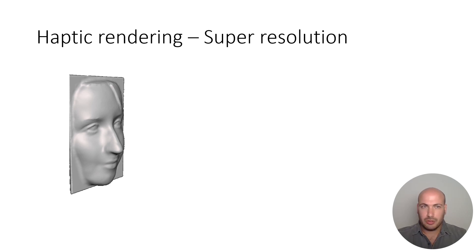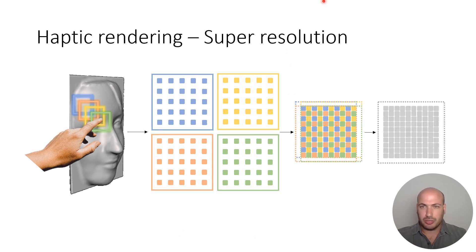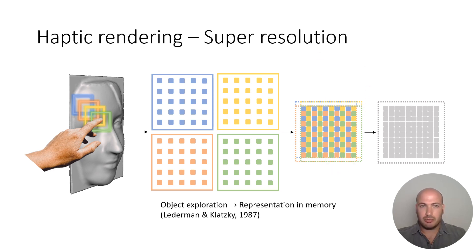The users move their finger along the surface. At every point, the feedback is given in low resolution. Between the high operation frequency and the high accuracy tracking, the users can recreate a high-resolution representation in memory by combining these low-resolution samples. This process is very similar to how humans sense objects with their actual hands.